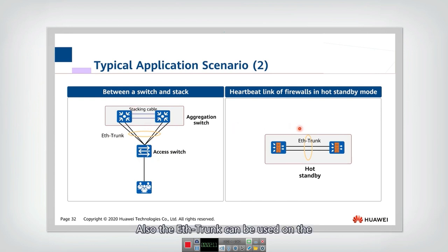Also, the Ether trunk can be used on the heartbeat link of the firewalls. Assume that there are two firewalls working at the hot standby mode. So between these two firewalls, they need to set up a link to transmit the heartbeat signals. So we call this link as the heartbeat link. And for the heartbeat link to prevent the link failure problem of a certain link, actually there should be multiple links connected with each other. So we can still use this Ether trunk to aggregate the multiple links together to form a logical link.